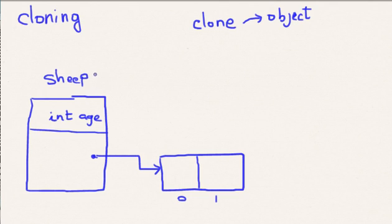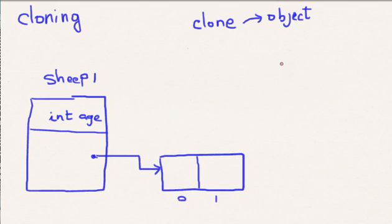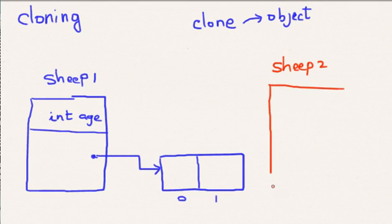Now when you clone this, let's pretend that sheep one has been cloned. So we will clone it to say sheep two using this clone method that we talked about. After cloning, we have now two objects.